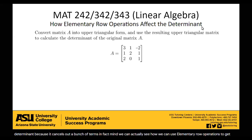So remember, there are three elementary row operations, and each of them affects the determinant in different ways. So let me kind of just run through that real quick.